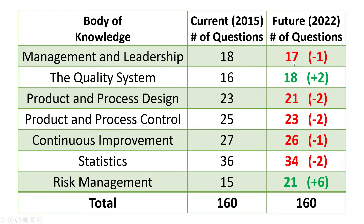Red is a decrease in questions and green is an increase. The first and probably most obvious increase is risk management. Over the years, risk management has been emphasized in the ISO standard and throughout industry, and ASQ wants to make sure that emphasis is reflected in the Body of Knowledge and on the exam. Risk management is getting six more questions on the exam. The majority of changes to the Body of Knowledge happen here in risk management — everything else is pretty minor in terms of additions or removals.